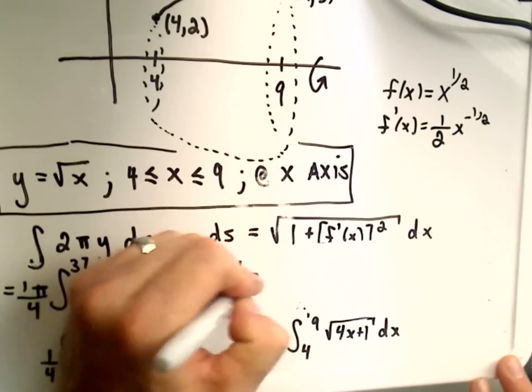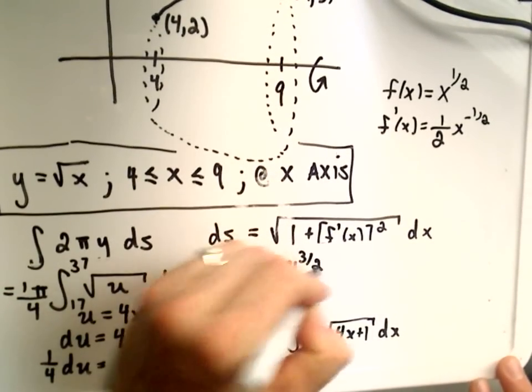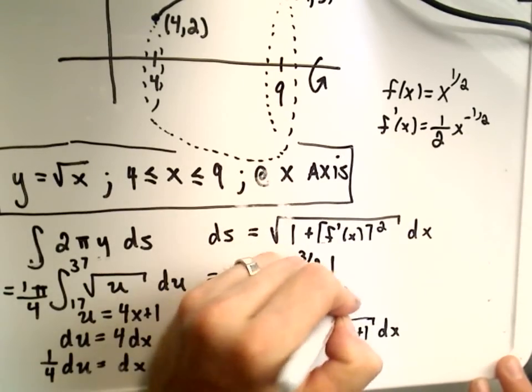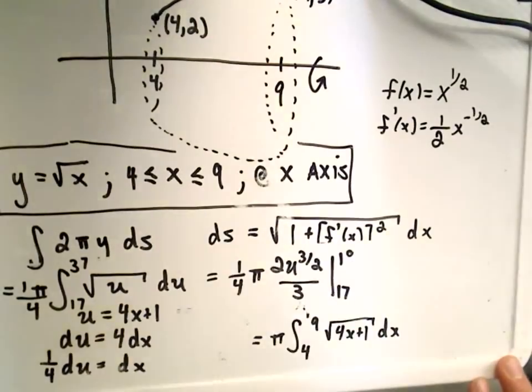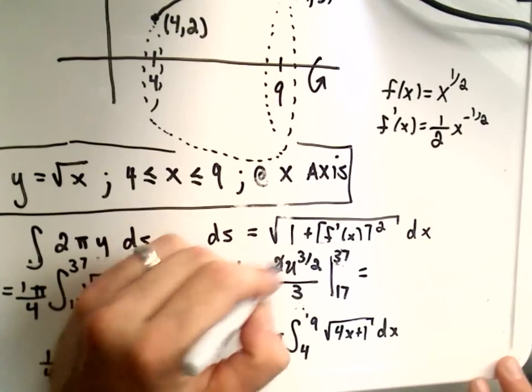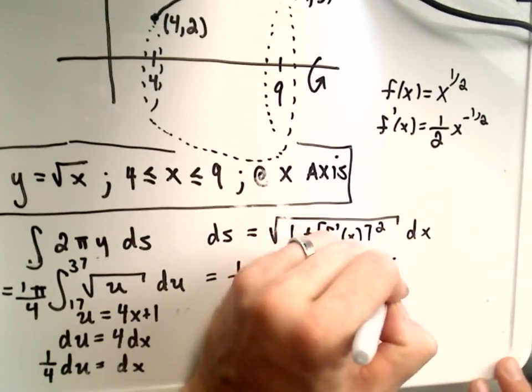Okay, so if we integrate, this is 1/4 π. u to the 1/2 will become u to the 3/2. Multiply that by 2/3. Again, we have to plug in 17 and 37. So let's see. The 2 and the 4 will make a half. So it looks like we get π over 6.